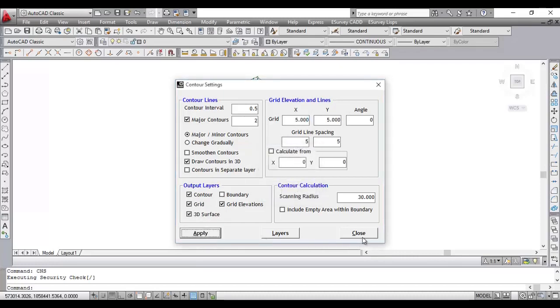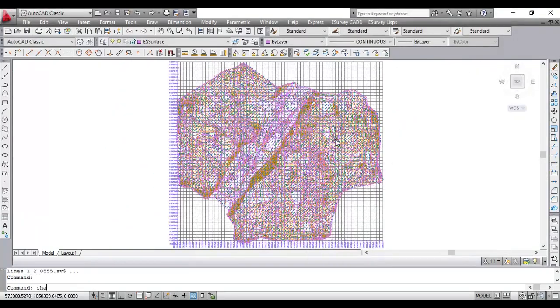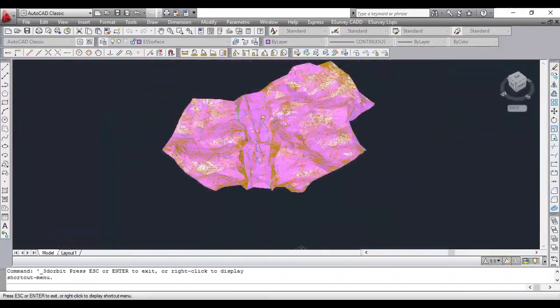If you want to see the triangulation, you can switch on the 3D surface option while generating contour. This is how you can generate contours with break lines within a CAD package.